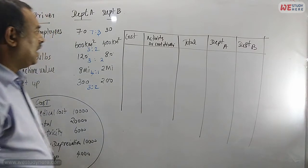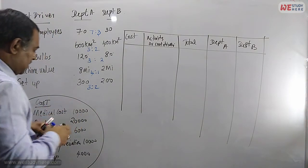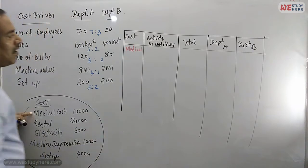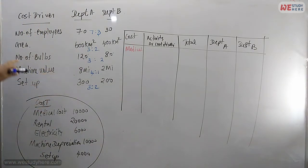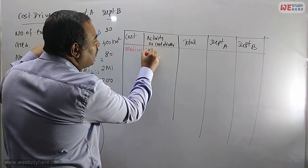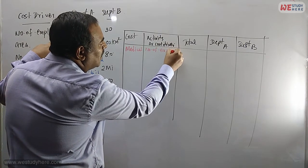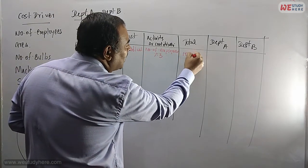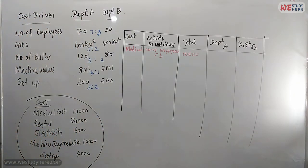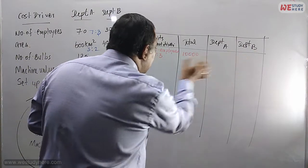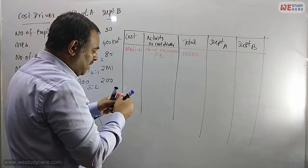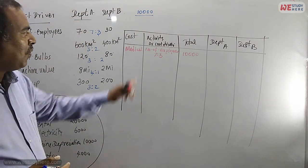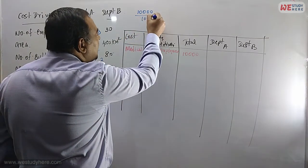The first cost is medical. Medical cost is 10,000. The cost driver for medical is number of employees. The ratio we are using is 7 is to 3. Total medical expenses are 10,000. Total cost divided by total employees ratio: 10,000 divided by 10 gives 1,000 per portion.